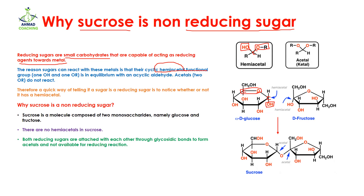Similarly, if you see here the fructose molecule — with this carbon you can see we have an –OH group and then we have an –OR group. So this is why glucose and fructose are reducing sugars.